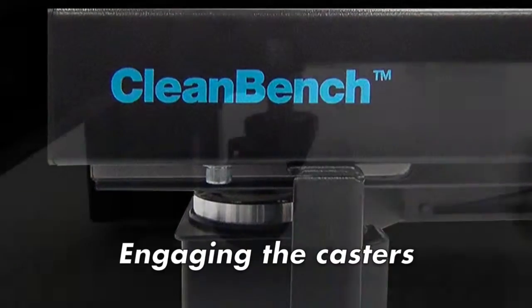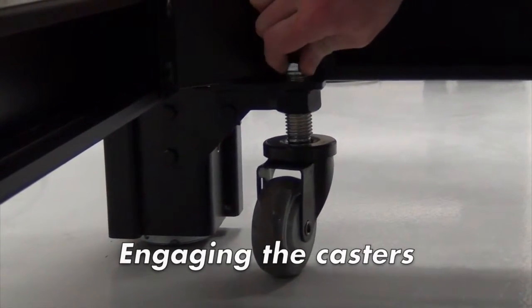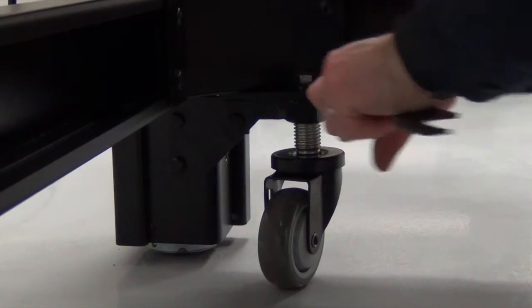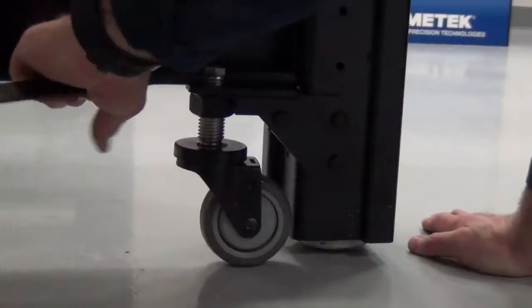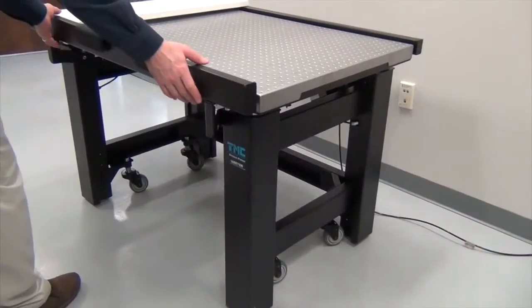Casters can be engaged using the wrench provided in the hardware bag. This is the same wrench used to adjust the leveling foot, just the opposite end. When engaging the casters, a fair amount of force is required to lift the table. Engage all four casters and the table is ready to move.